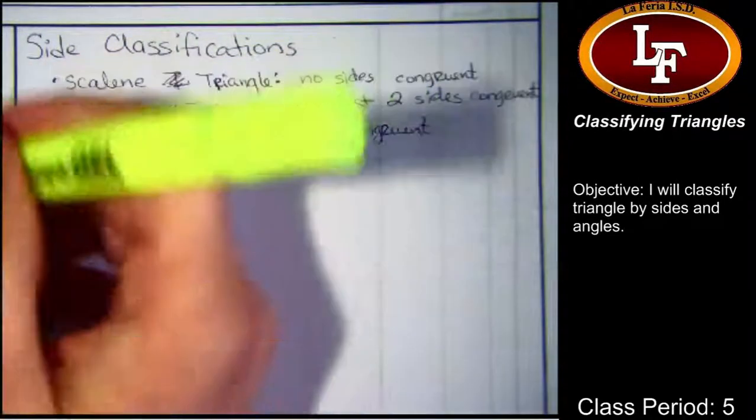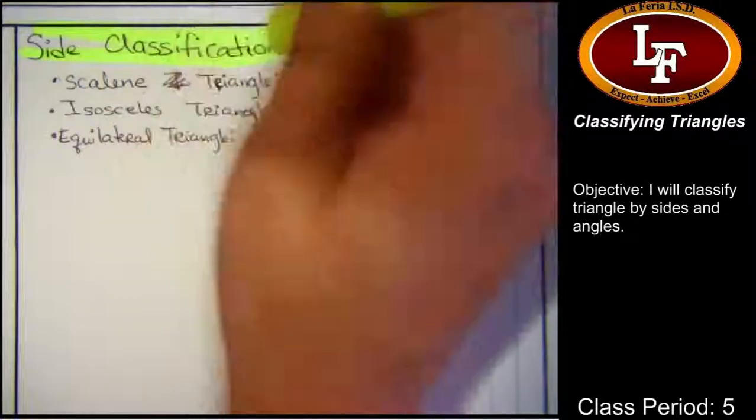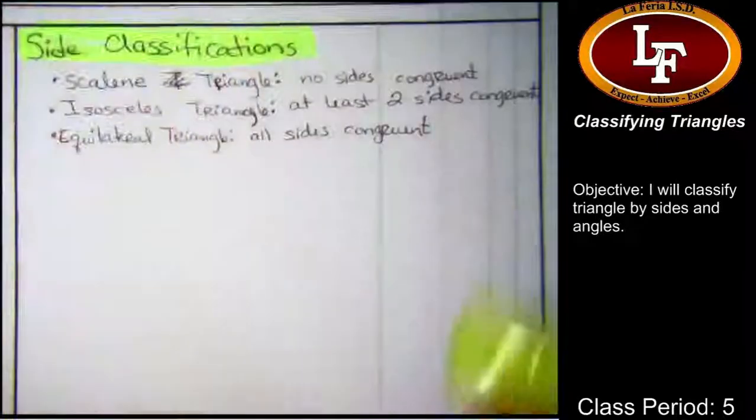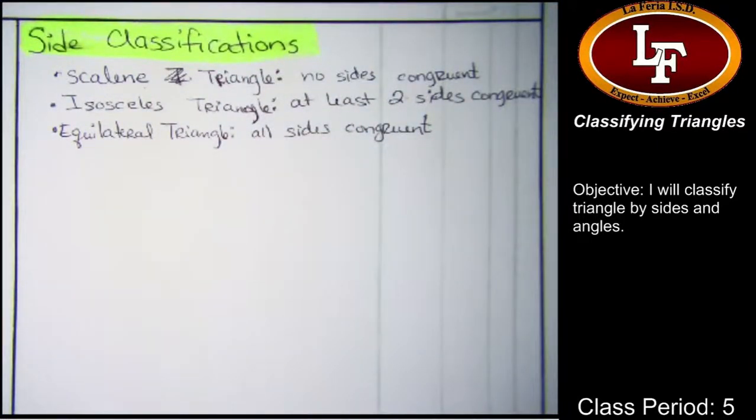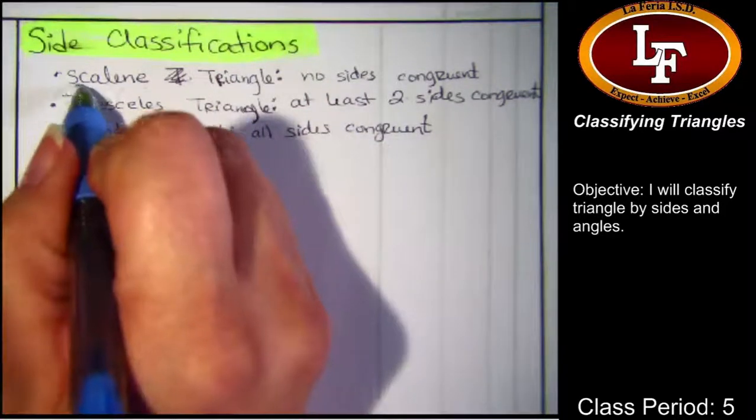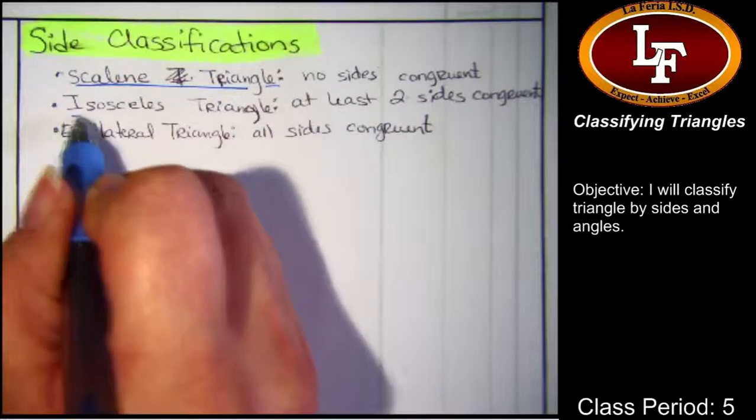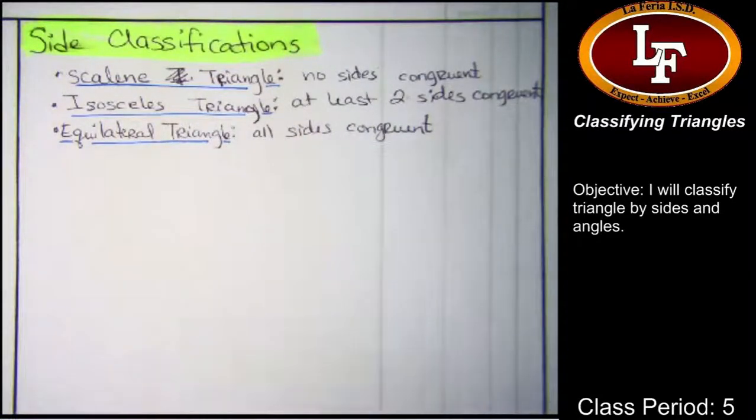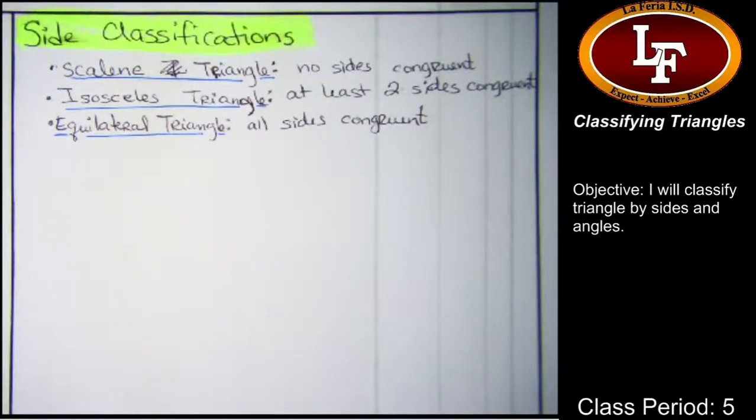I'd like you guys to take a highlighter and highlight the title. And then underline the names of the clubs. These vocabulary words. So, these are the three different types of triangles that we could have by their side lengths. The scalene, those sides aren't congruent. The isosceles, we got at least two of them that are congruent. And then the equilateral, all of them are congruent.